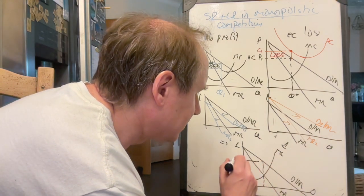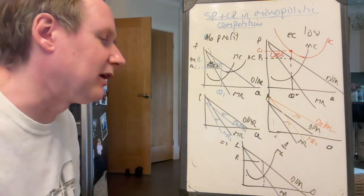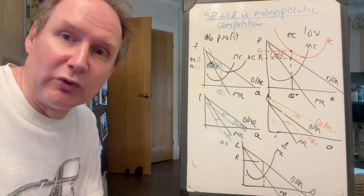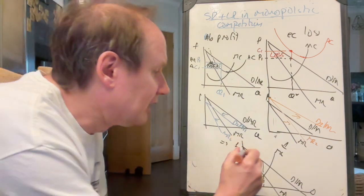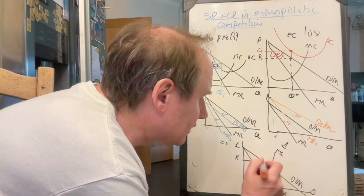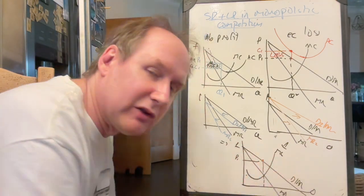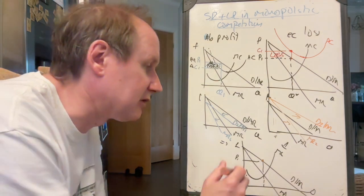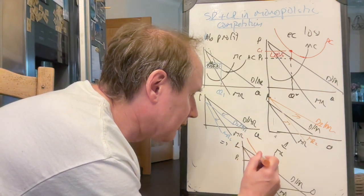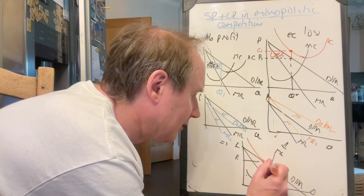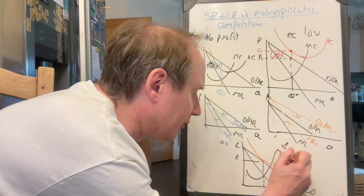This is one where it's particularly useful to draw the AC curve on afterwards. Because we want it to touch there, but its minimum point still needs to be where it crosses the marginal cost curve. So average cost goes like that, minimum point there, and then he can do what he wants after that.